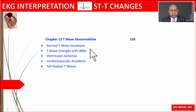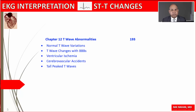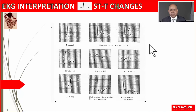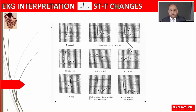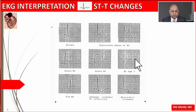We will also cover T wave abnormalities encountered in a variety of conditions such as bundle branch blocks, heart enlargements, ischemia, and metabolic abnormalities. Let's talk about hyperacute changes seen in acute myocardial infarction, which affect both the ST segment and T waves. Let's look at the evolutionary changes of acute myocardial infarction and see how ST-T changes unfold.